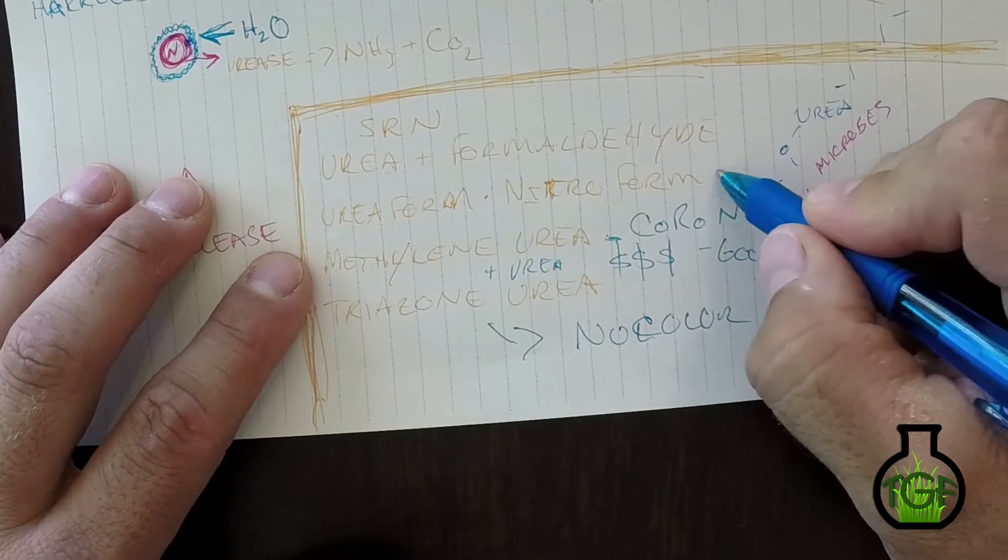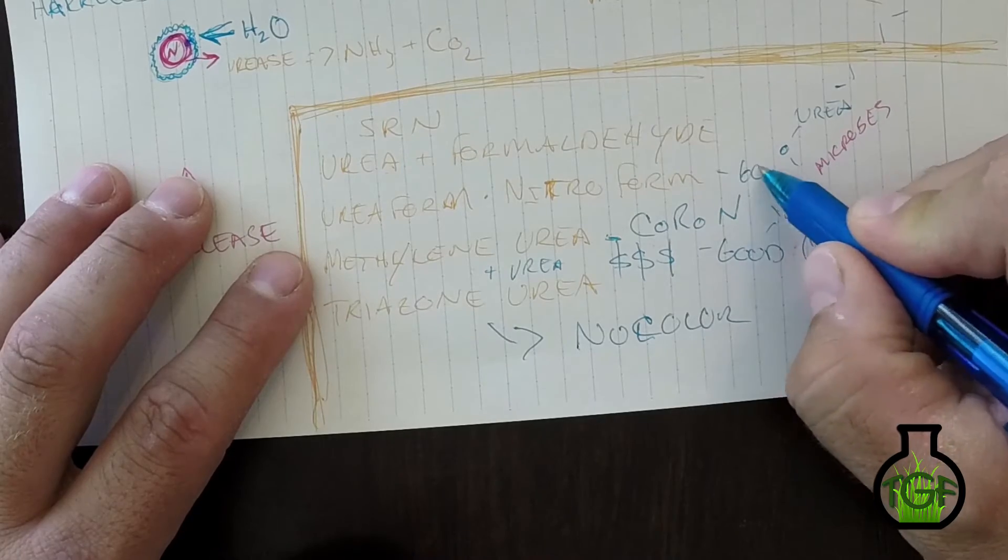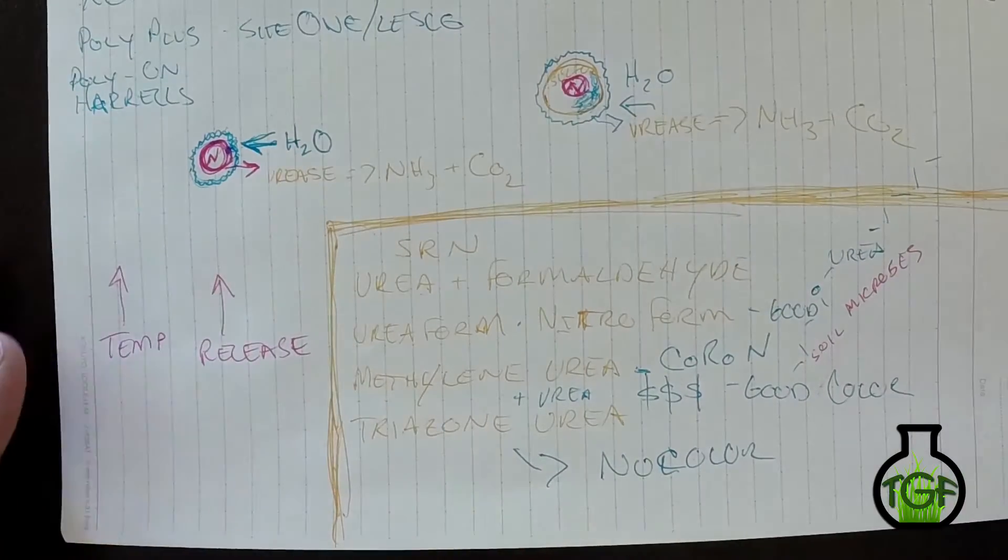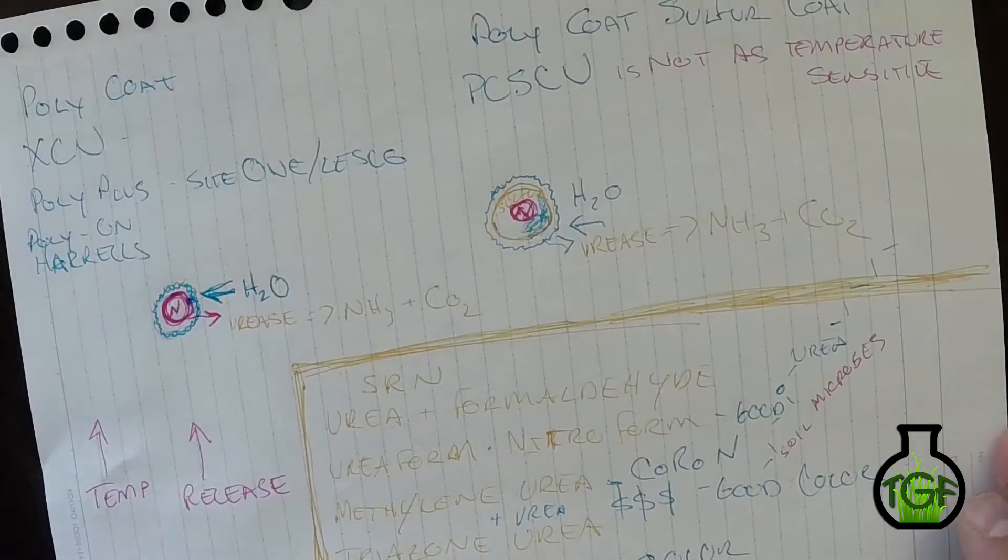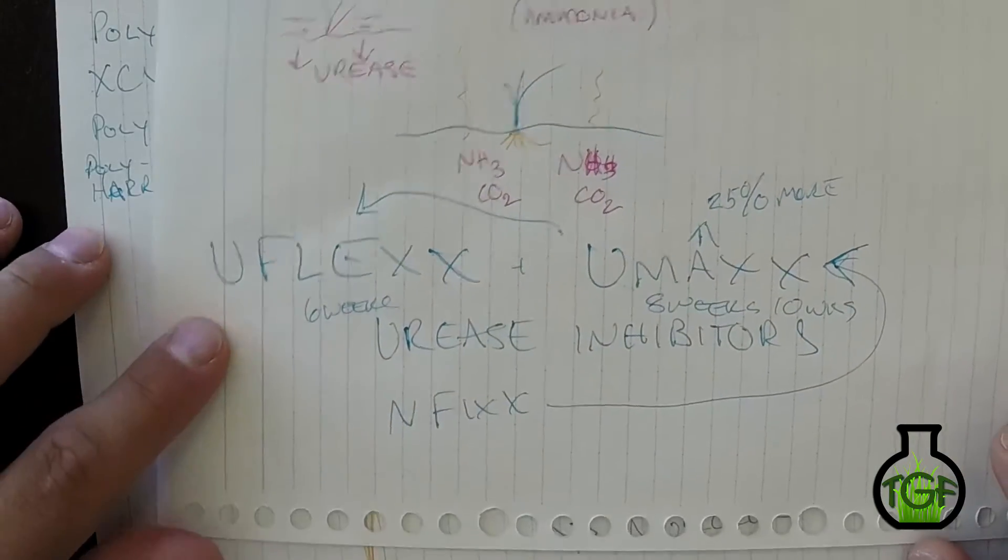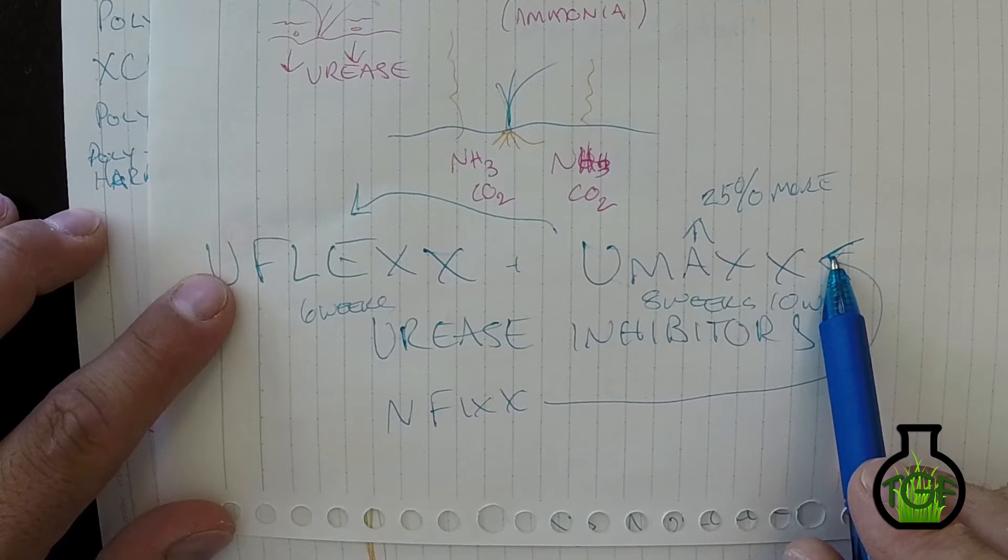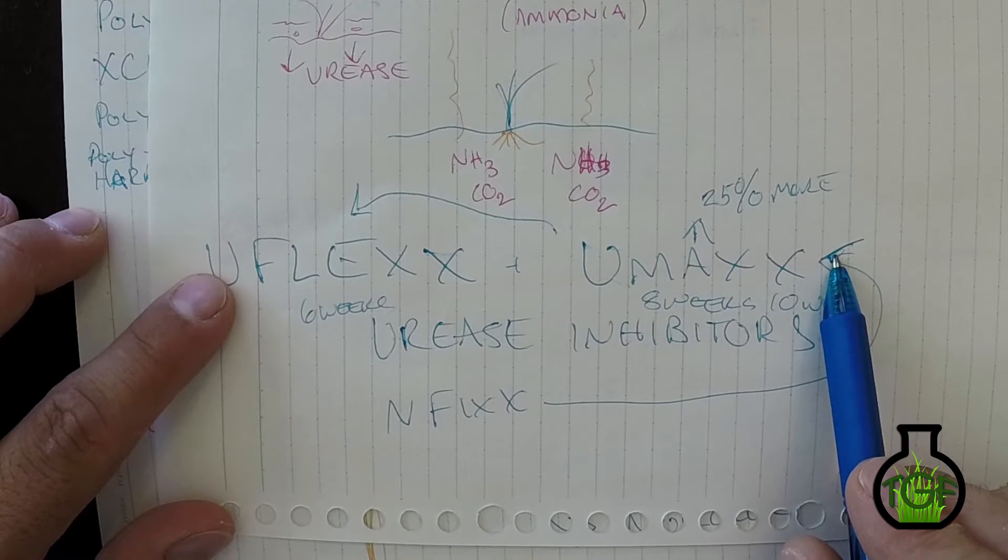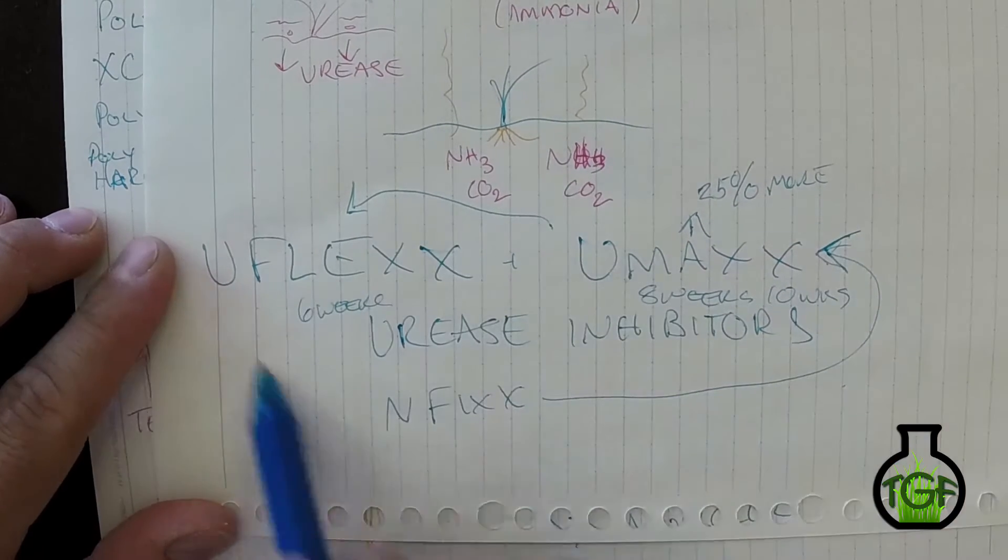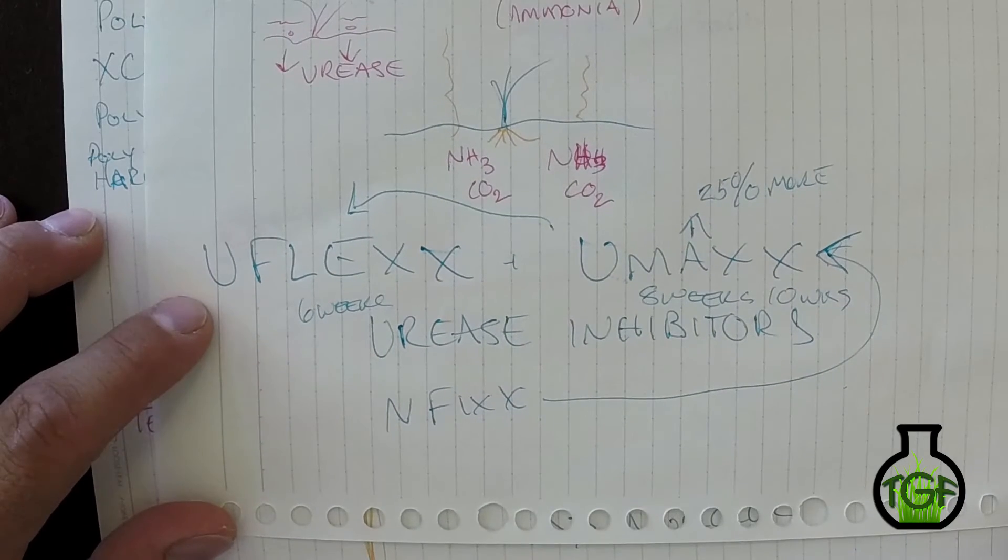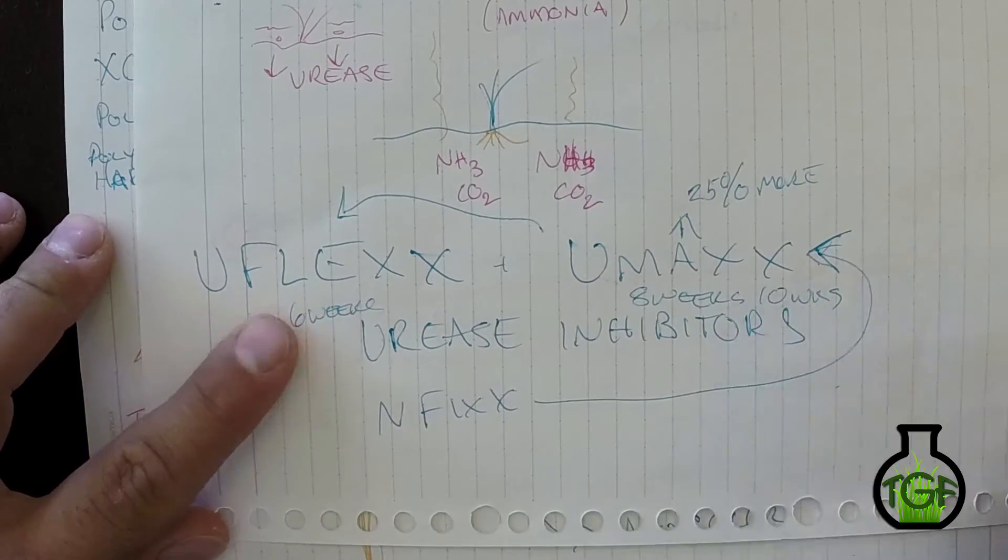Yeah, with Nitro form you get good color, but you don't get the same level of color that you get from U-flex or U-max. You're actually going to get a lot better color with those, but you're not going to get the same length of color—not the same amount of color for the same length of time with your U-flex and U-max. So again, six weeks, eight weeks.